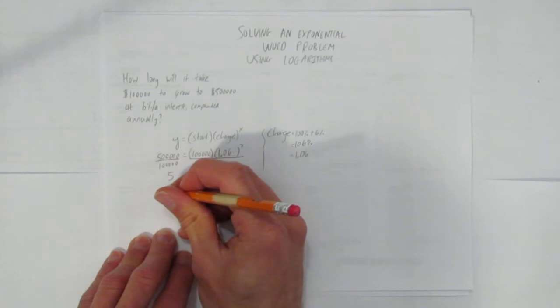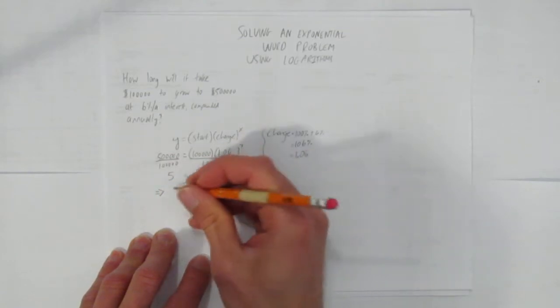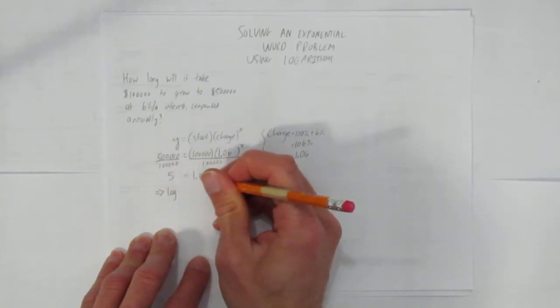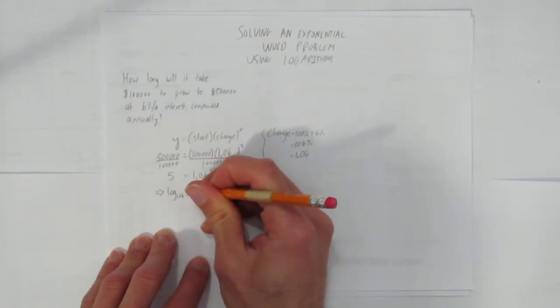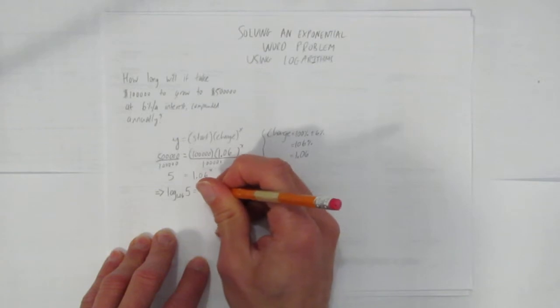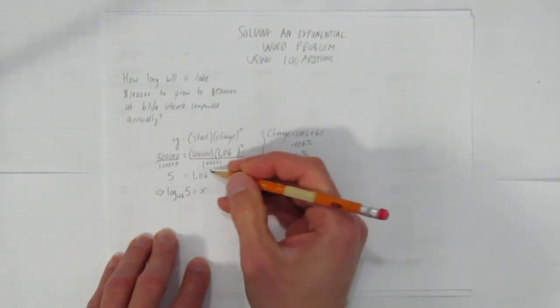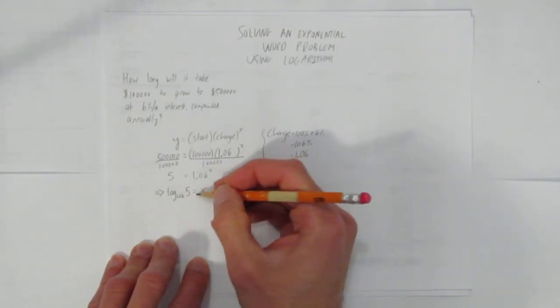We'll convert this to a logarithm by putting implies, and we'll write log. The base is 1.06, the answer is 5, and the exponent is x. That's how logarithms work. We've converted this equation into a logarithm.